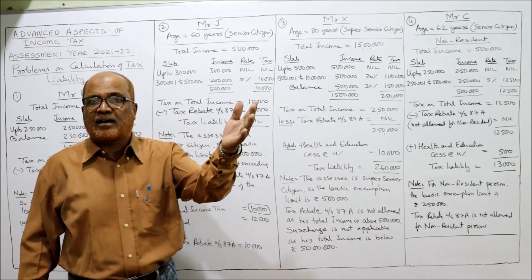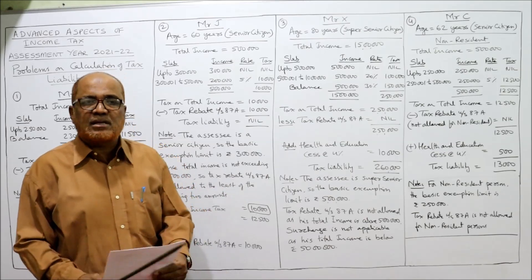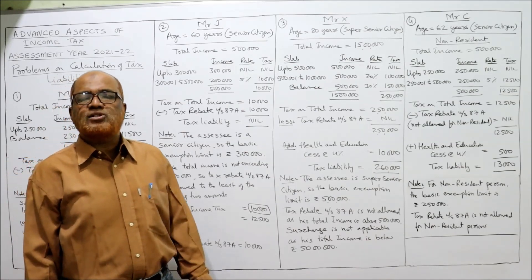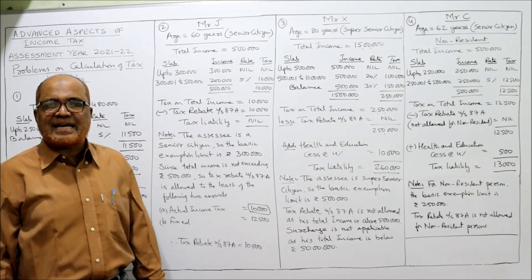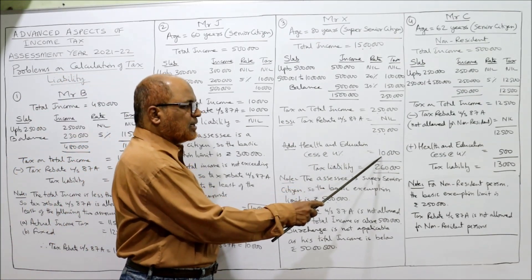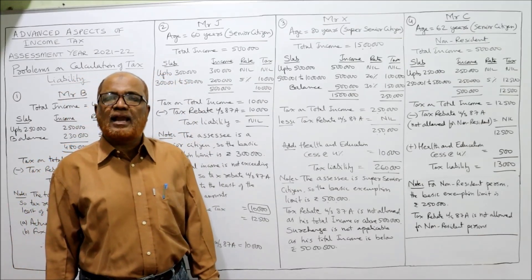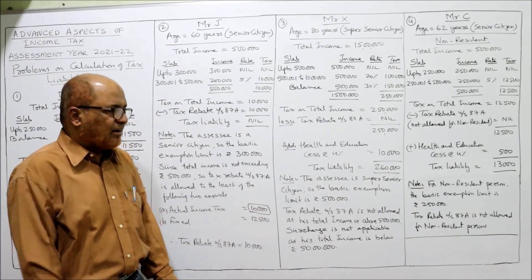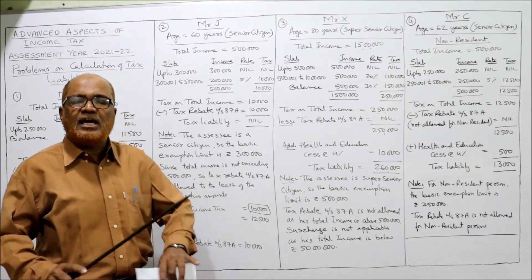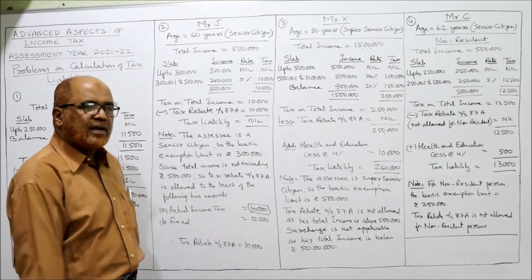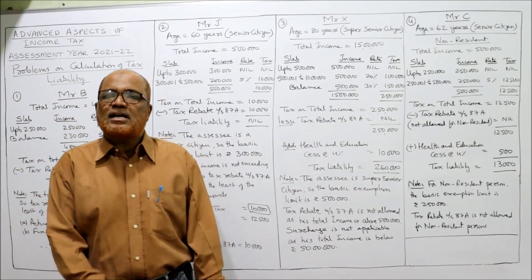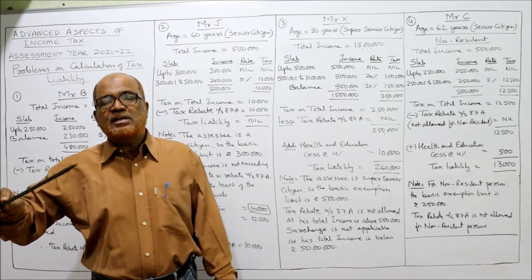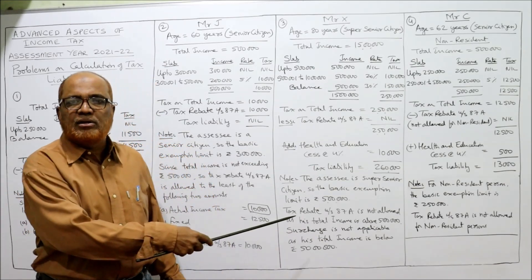Tax rebate under section 87A is not allowed because the income is more than ₹5,00,000 — when total income exceeds ₹5,00,000, no tax rebate is allowed. Health and education cess: every taxpayer must pay 4% of the basic tax. 4% of ₹2,50,000 equals ₹10,000. Total tax liability: ₹2,60,000. Note: super senior citizen, basic exemption ₹5,00,000, rebate under 87A not allowed as income exceeds ₹5,00,000. Surcharge is also not applicable because total income is below ₹50,00,000.